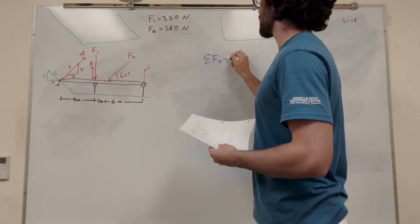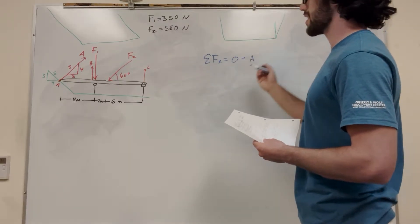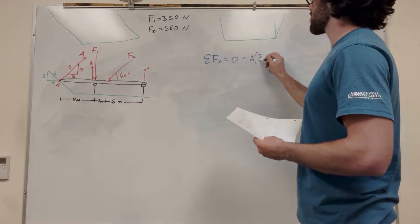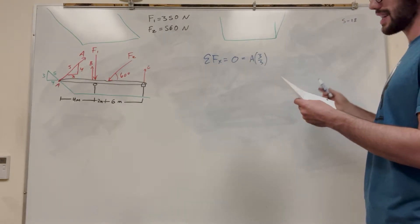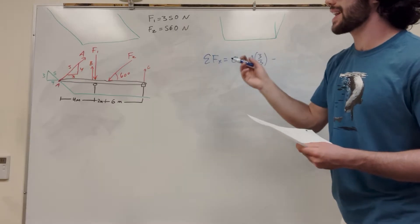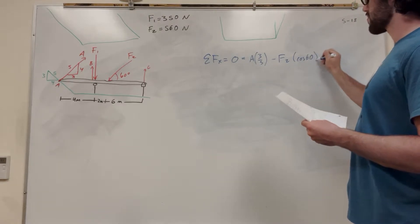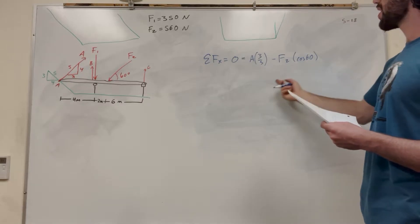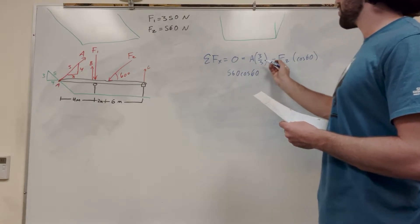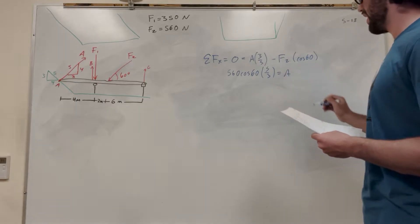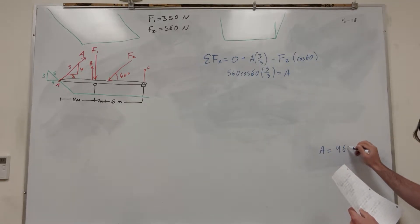Sum of the forces in the X direction equals zero because we're at equilibrium. That's going to be A acting positively in the X direction, and its ratio in the X direction is 3 over 5, because it goes 3 in the X direction for every 5 of the hypotenuse. And then we're subtracting force 2 because it's pushing back in the X direction, so it's going to be minus force 2 cosine of 60. We know force 2 is 560, so 560 cosine of 60, multiply by 5 divided by 3, is equal to A. Doing the math, we get A is equal to 467 newtons.